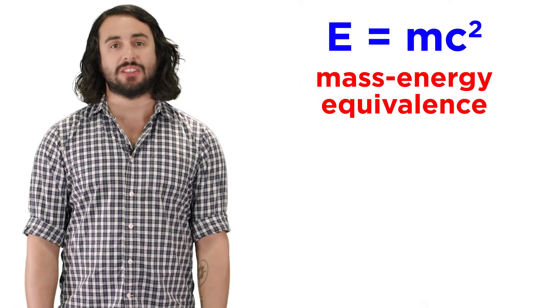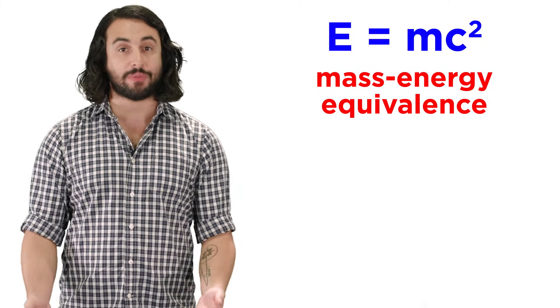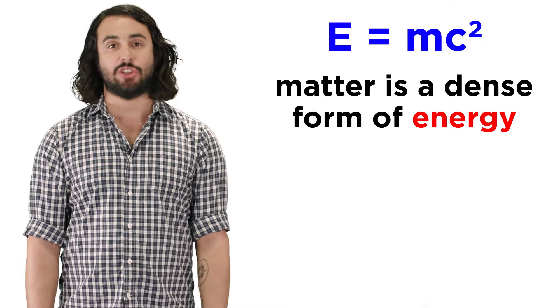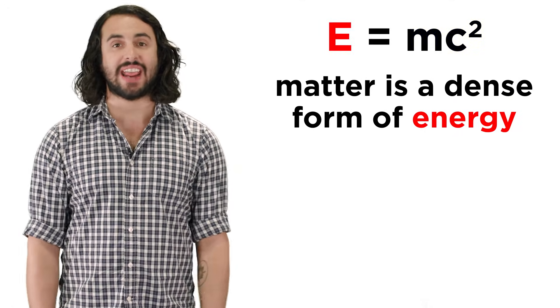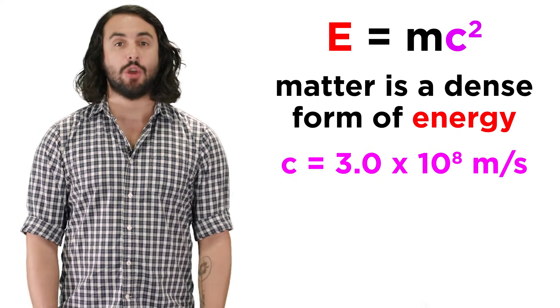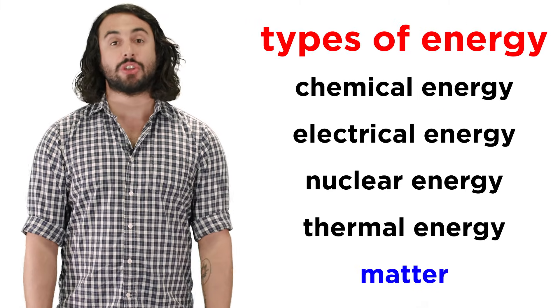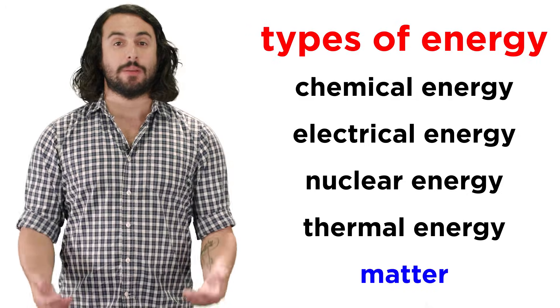E equals mc squared has many implications given the incredible conclusion that energy and mass are equivalent. Mass is energy, an incredibly dense energy at that, since to get the energy contained in some amount of matter, you multiply its mass by the speed of light squared, which is a huge number. So to the list of the types of energy, we can add one more, matter.